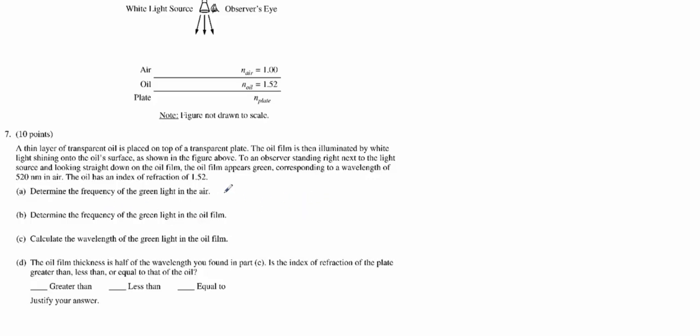First we want to determine the frequency of the green light in the air. Simply, we're looking for the frequency of green light. If we know the wavelength, let's look at the original equation: c equals lambda f. Or the speed of a wave is equal to the wavelength times frequency. In this case the speed is the speed of light.